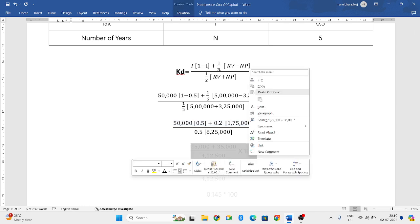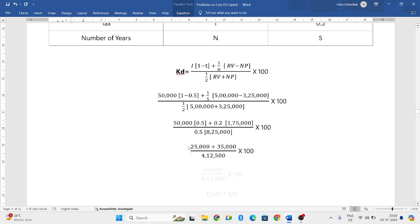When you further simplify the formula, 50,000 into 0.5 will be 25,000. 0.2 into 1,75,000 will be 35,000. And 0.5 into 8,25,000 will be 4,12,500.